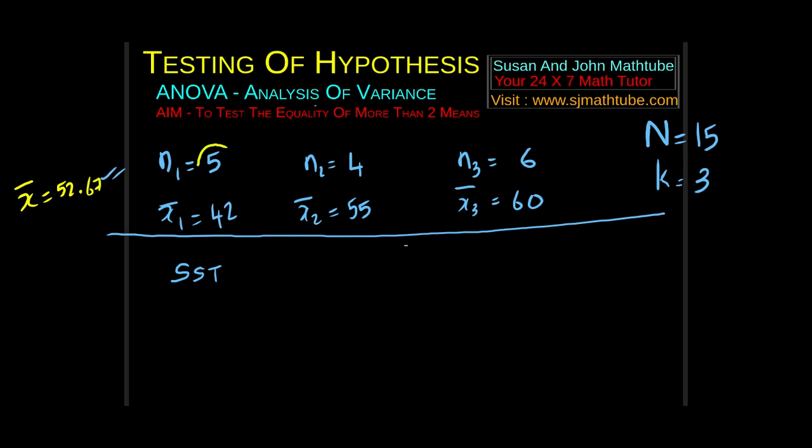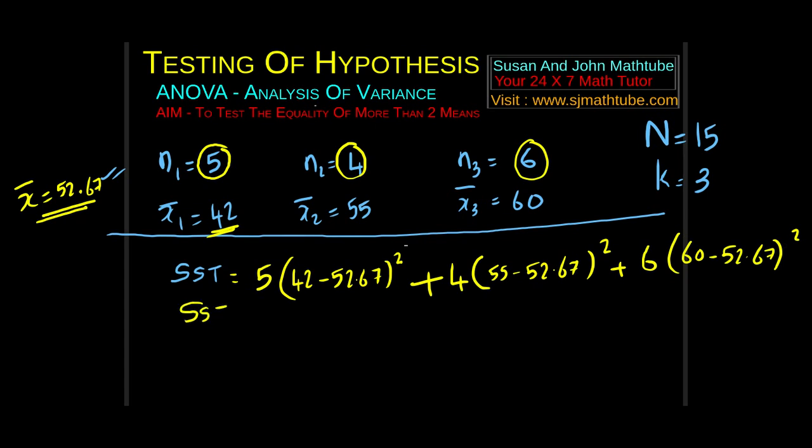You have the combined mean here, x bar equal to 52.67. What you do is select this 5, then look at the combined mean and this. You take the difference between them and square. Plus, again, 4 times 55 minus 52.67 the whole square, plus 6 times 60 minus 52.67 the whole square. SST is equal to, I got 913.33.